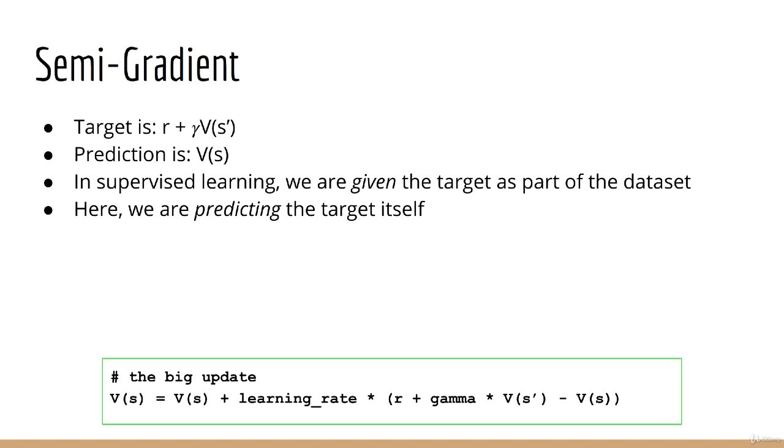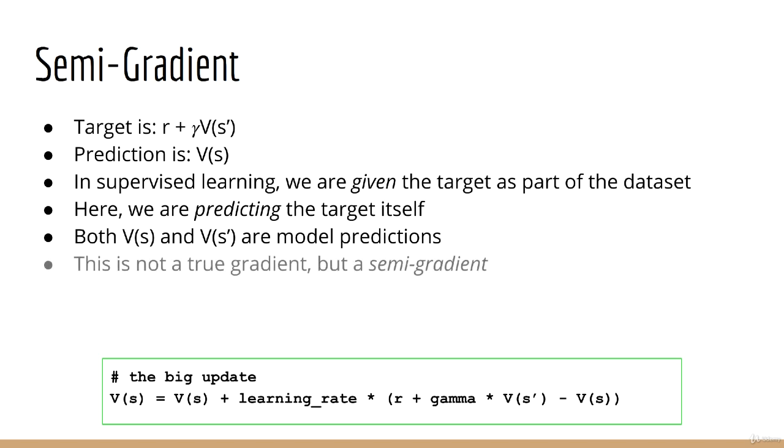Part of the target is given, that's the reward r. But the other part, V(s'), is actually a model prediction. Thus, it's more correct to say that what we are doing is not quite gradient descent. It's called a semi-gradient instead. But this is just a name. It is the principle that's important. The principle is, we don't know the true target, we are estimating it. And this makes it very different from supervised learning.